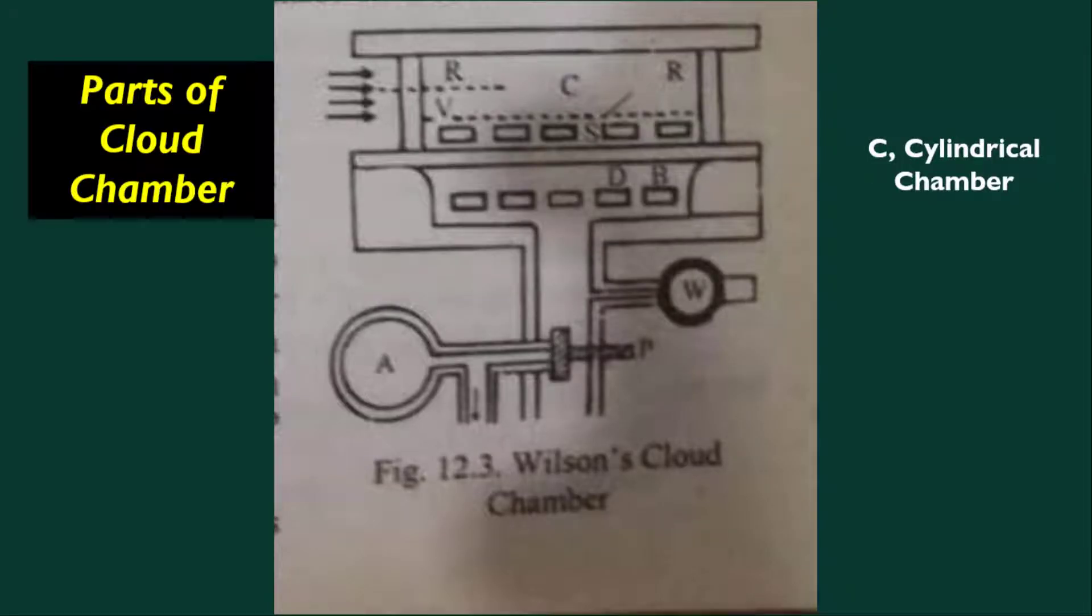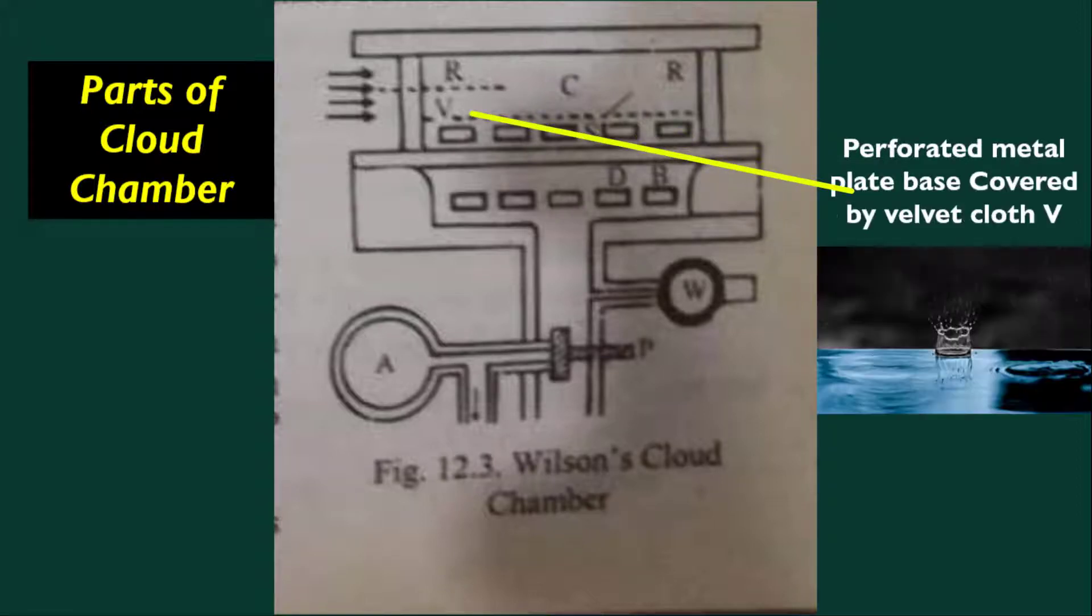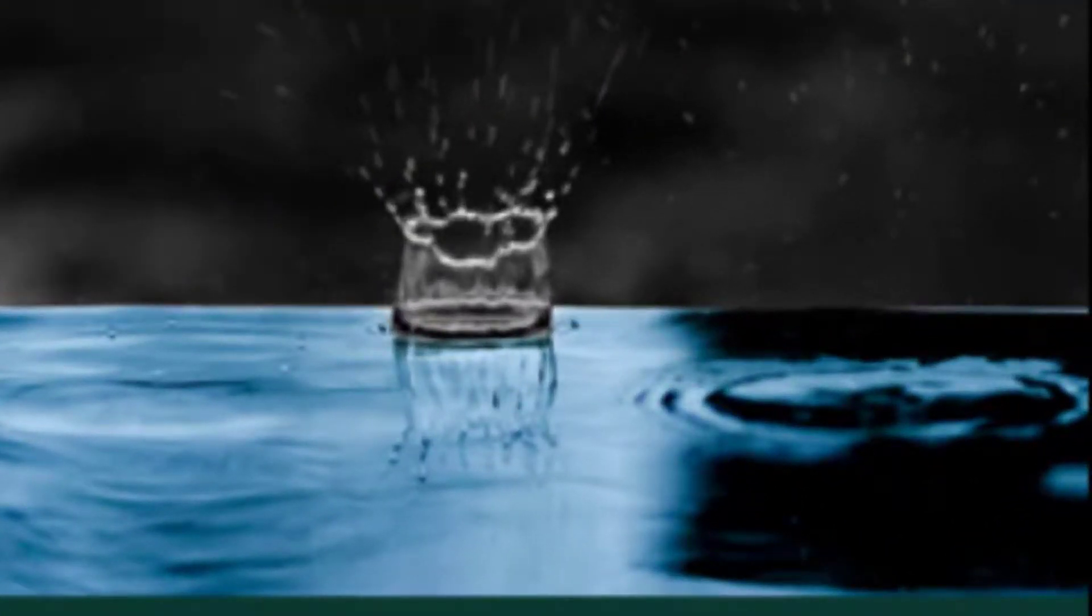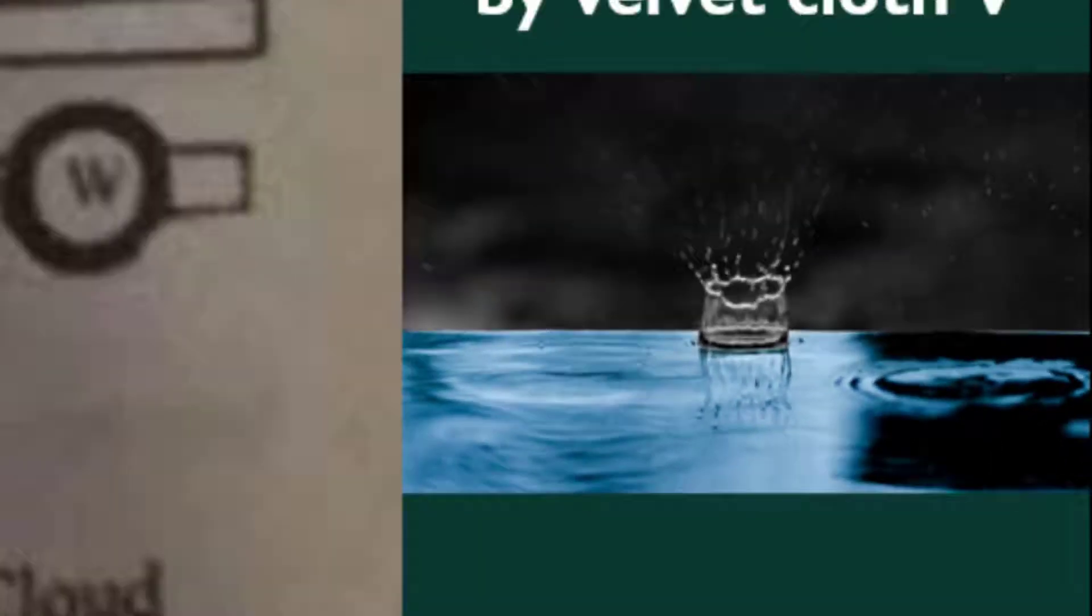Next, the construction of cloud chamber. Cloud chamber consists of a cylindrical glass chamber C. It is provided with a glass plate cover and a perforated metal plate base. The perforated metal plate is covered by velvet cloth V, and water is sprinkled on velvet cloth to provide water vapors to saturate the air in the chamber C.